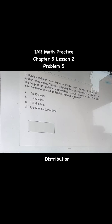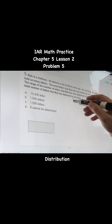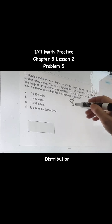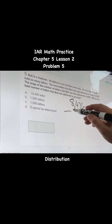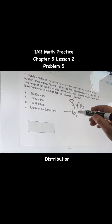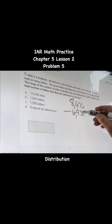To find the least number of letters that Bob has delivered, subtract the range from the largest number. So you have 8,476 minus 6,930.